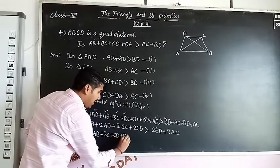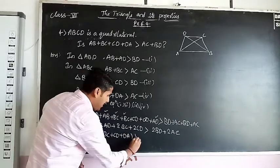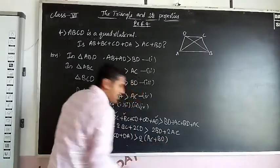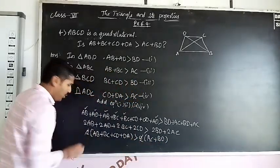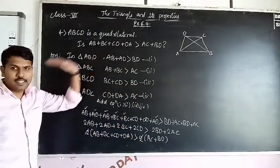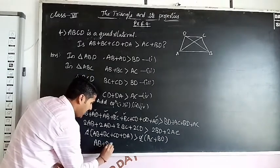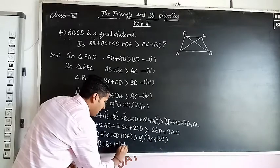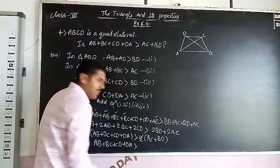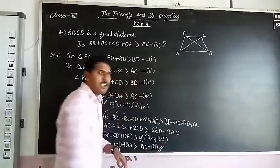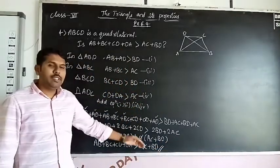This is greater than two times AC plus BD. Cancel the two, so you will get the result. AB + BC + CD + DA is greater than AC + BD. This is the way of proving this.